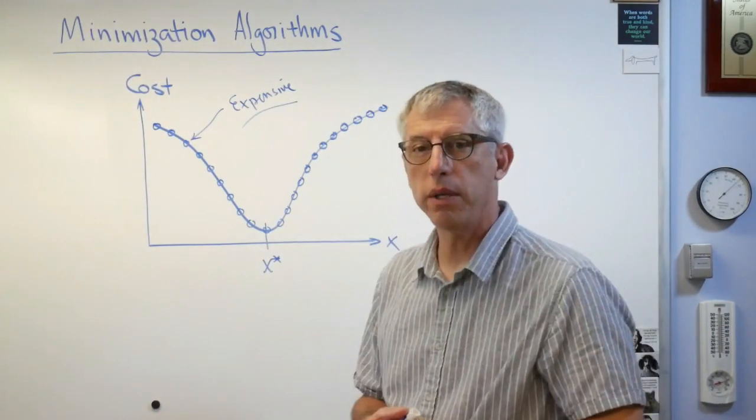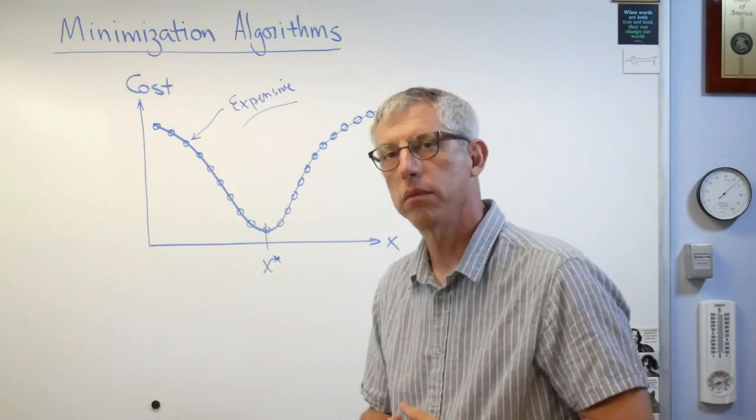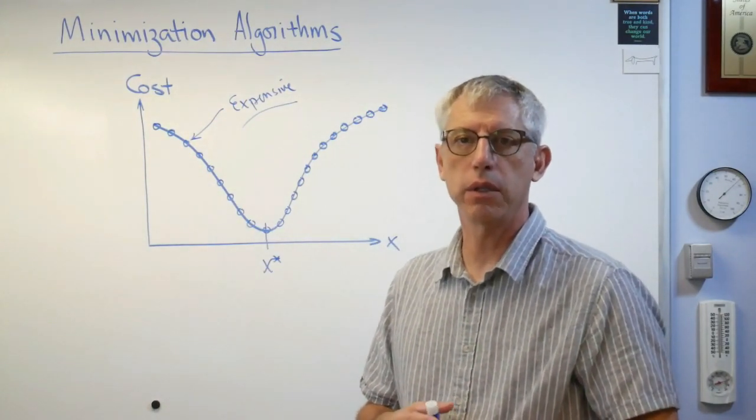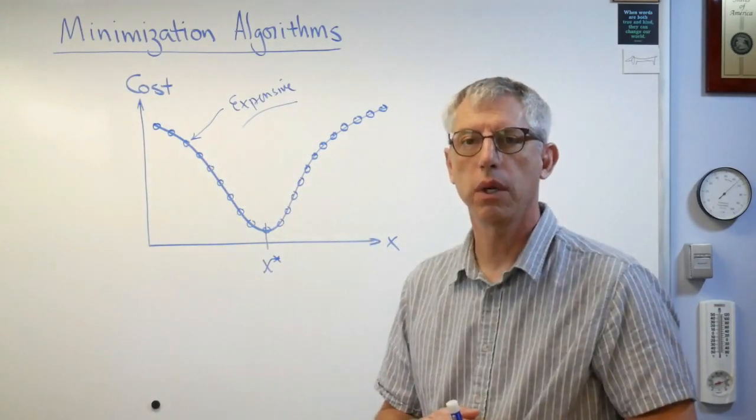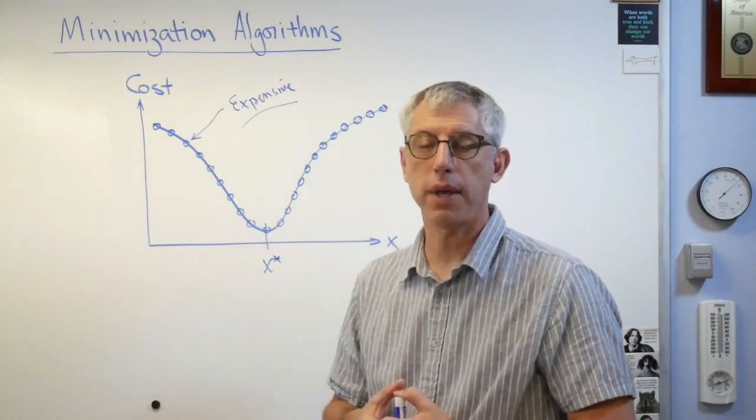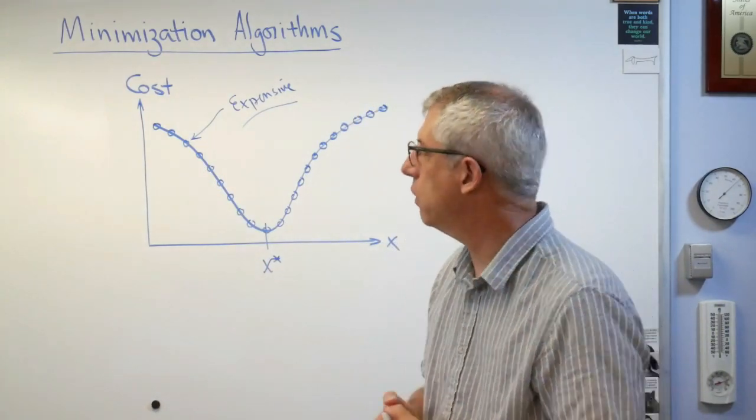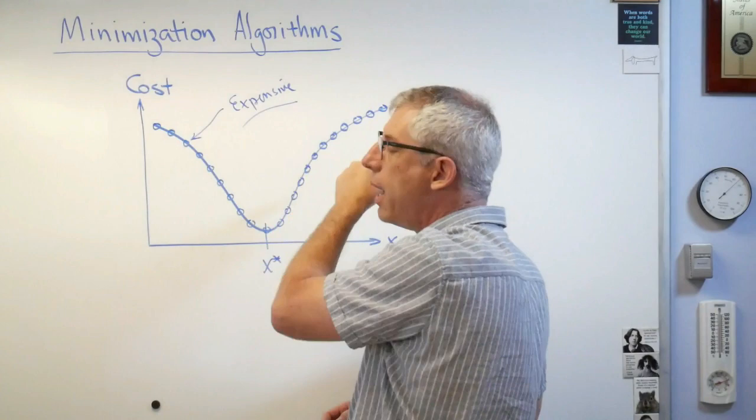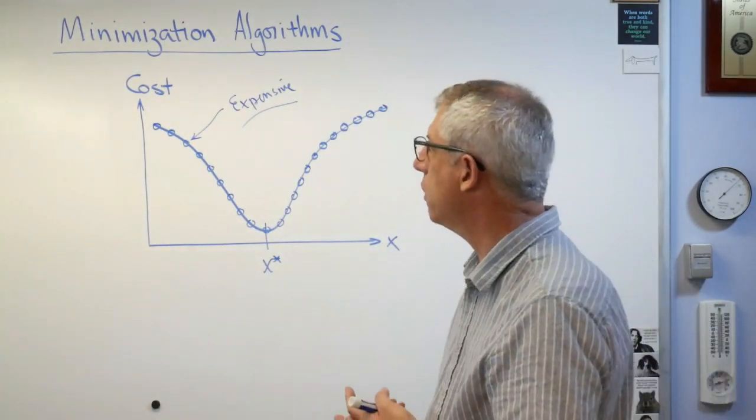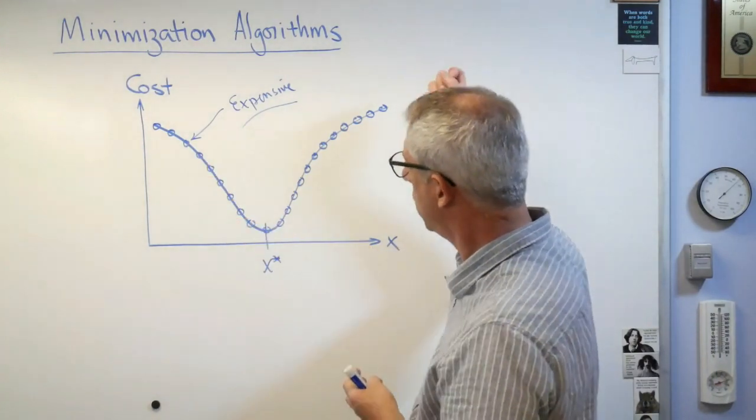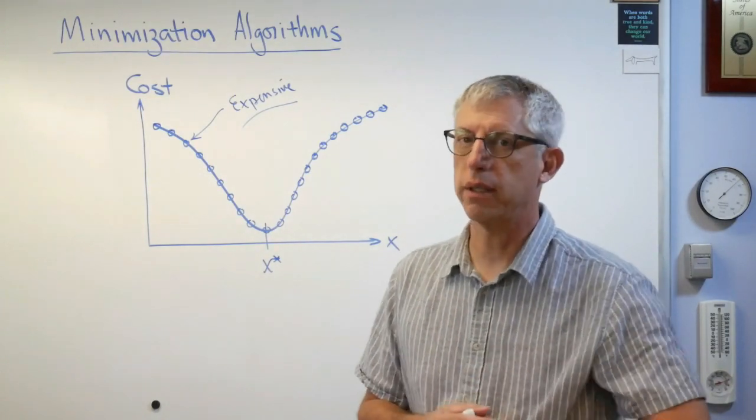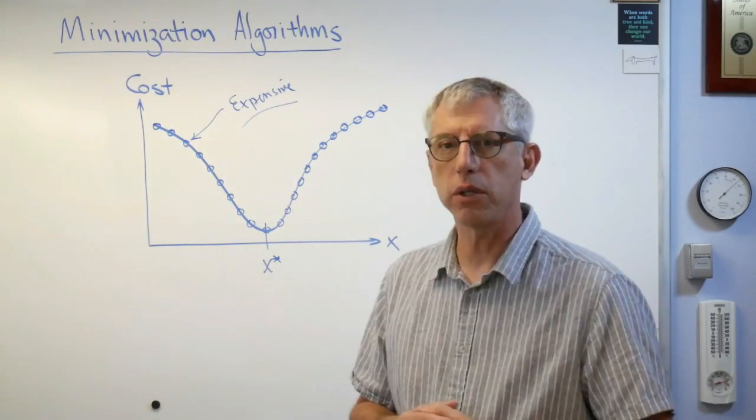Well, what do you mean by expensive? What if it takes two hours on an expensive clustered computer to generate each one of those points? Every one of those points may cost the company hundreds or even thousands of dollars. Well, you can't just grind all these out. Number one, it takes a long time, and number two, it costs a lot of money. Well, you can't go to your boss and say, hey, I just blew, you know, $100,000 making this curve. What do you think? That's not going to make your boss too happy.